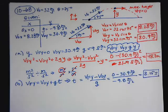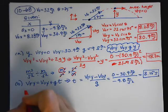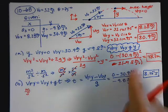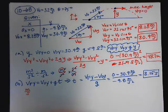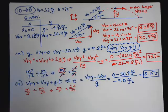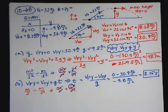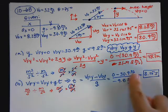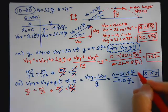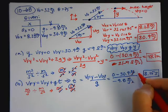Let's check the units: a meter per second divided by a meter per second squared is a meter per second times a second squared over a meter — this cancels with that, this cancels with that, and I end up with seconds, which is my correct unit for time.